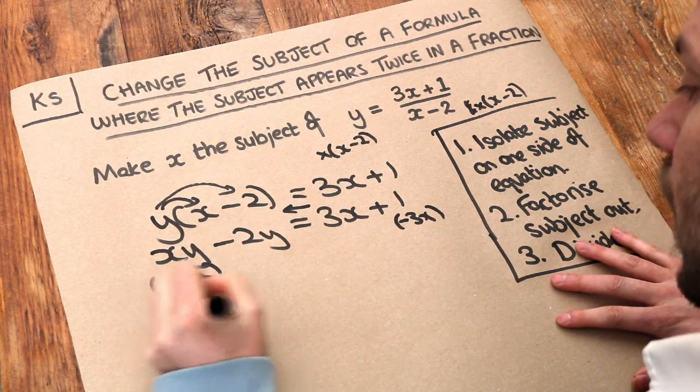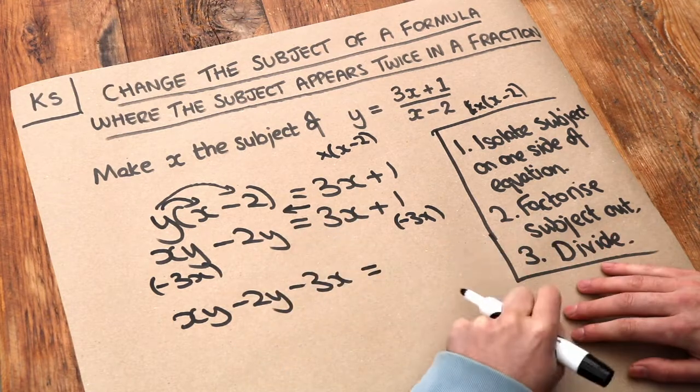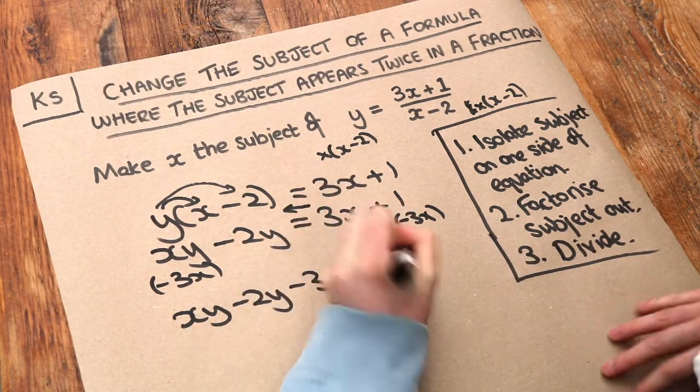And then that gives us xy minus 2y. And then we're subtracting the 3x. Subtracting 3x from the left-hand side just gets rid of the 3x, leaving just 1.